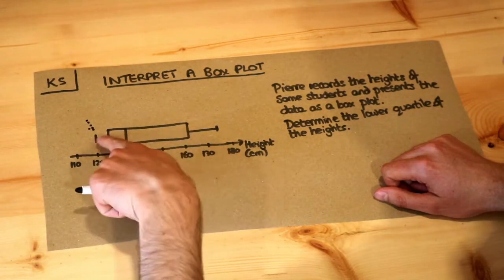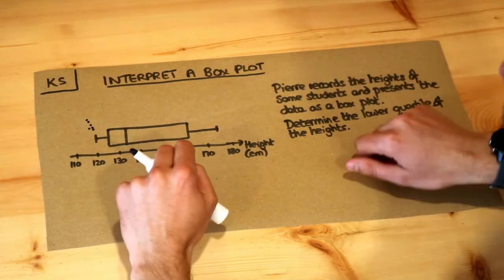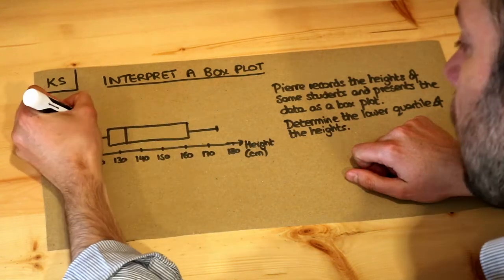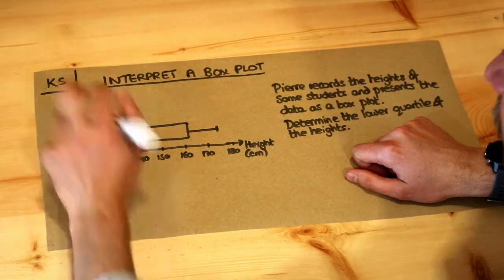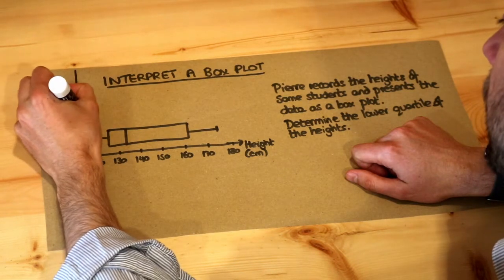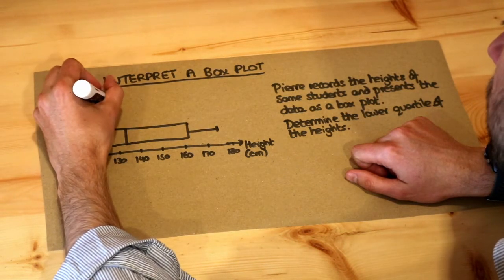We have a box in the middle divided into two and then we have two whiskers as they're known. Now the value at the end of the whisker on the left, that is the minimum value of what your data is.